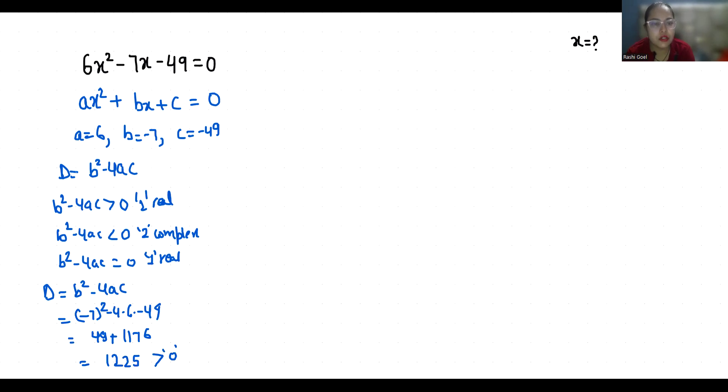So let's find out the real roots. 6x² minus 7x minus 49 equals zero. So I'm going to use the quadratic formula, that is minus b plus minus square root of b² minus 4ac, all over 2a.